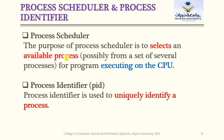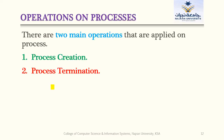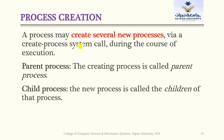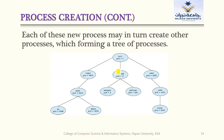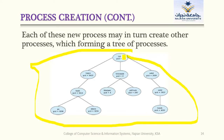The purpose of the process scheduler is to select an available process from the possibly many processes for execution on the CPU. We also discussed the process identifier, which is used to uniquely identify a process. For operations on processes, we have two main operations: process creation and process termination. When a new process is created using the system call fork, that process is called a child process. In the process tree diagram, no two processes have the same process ID — each process must have a different process ID.